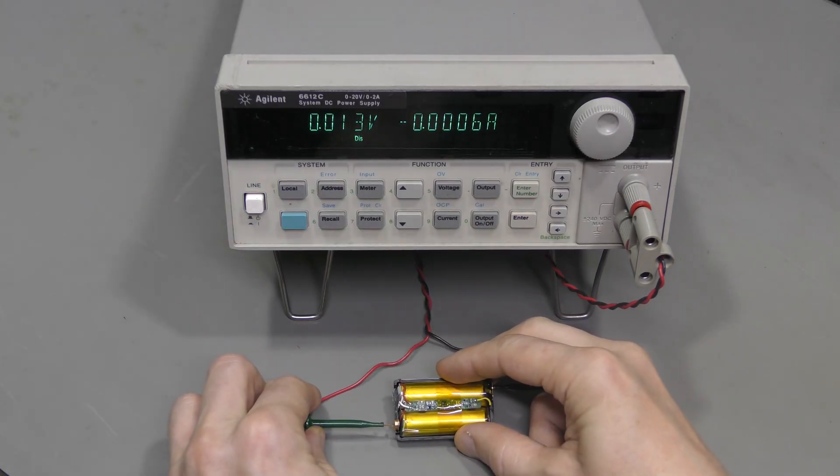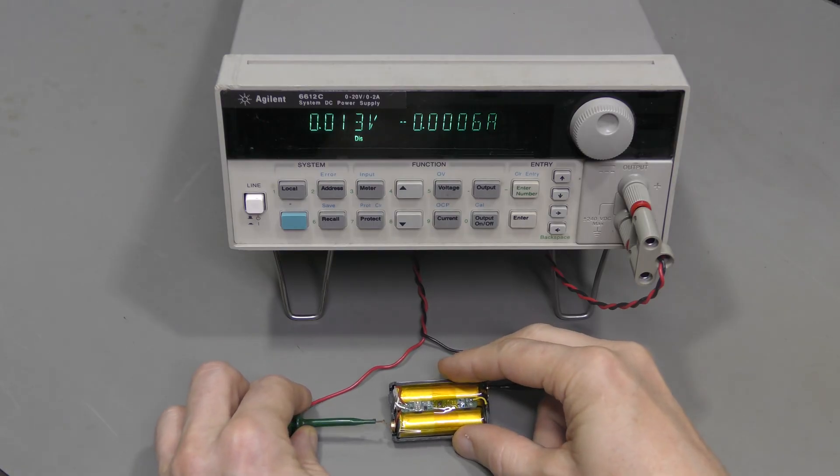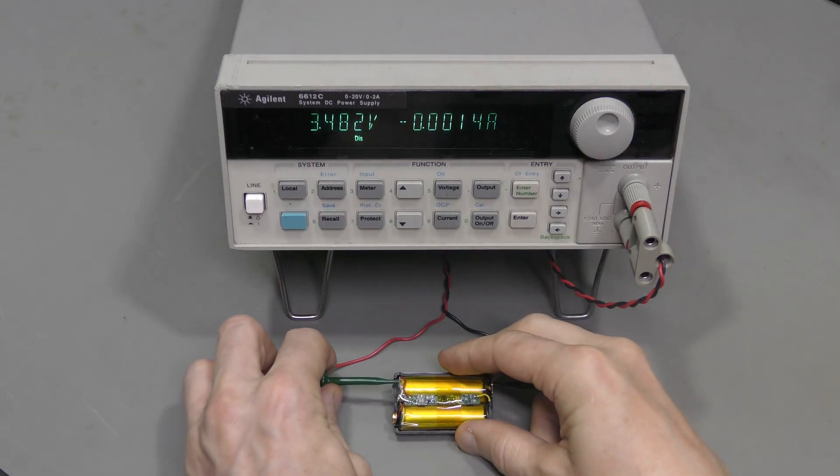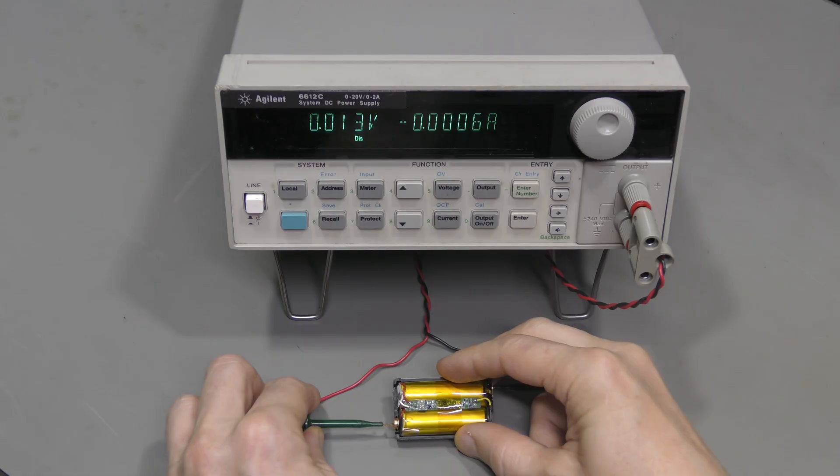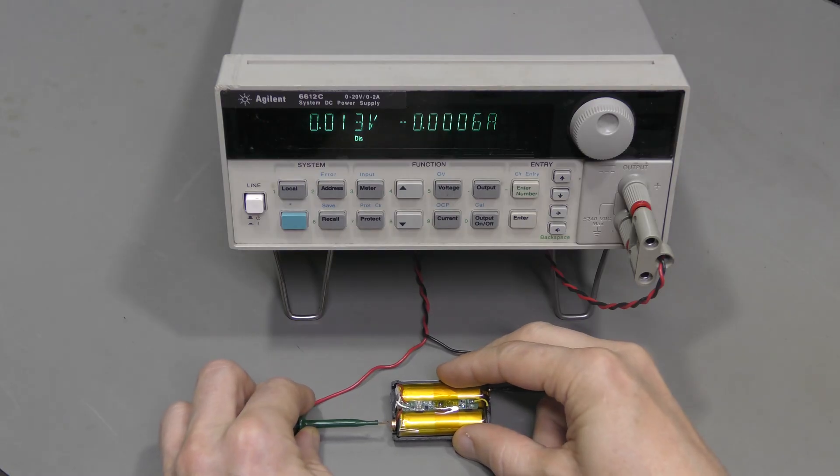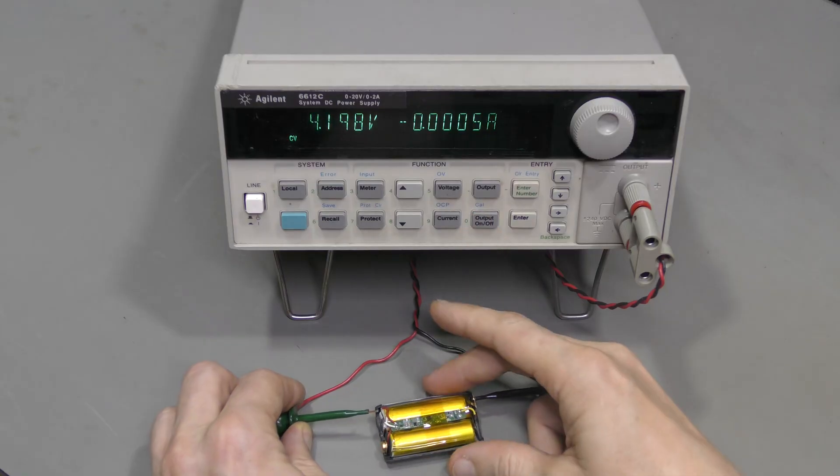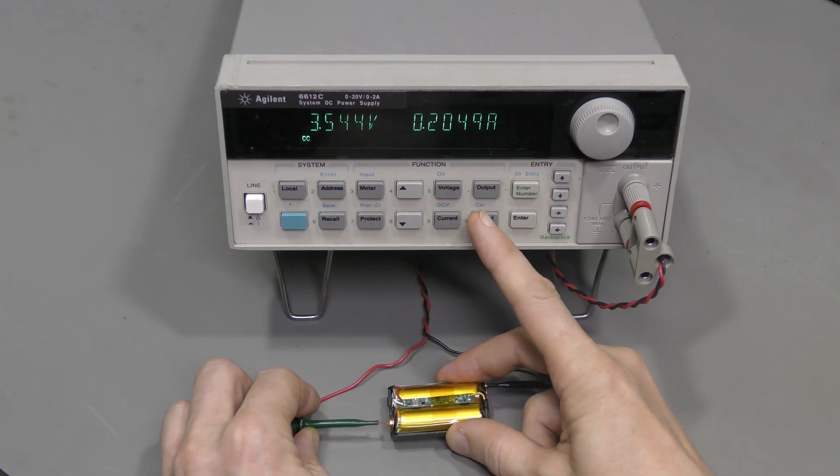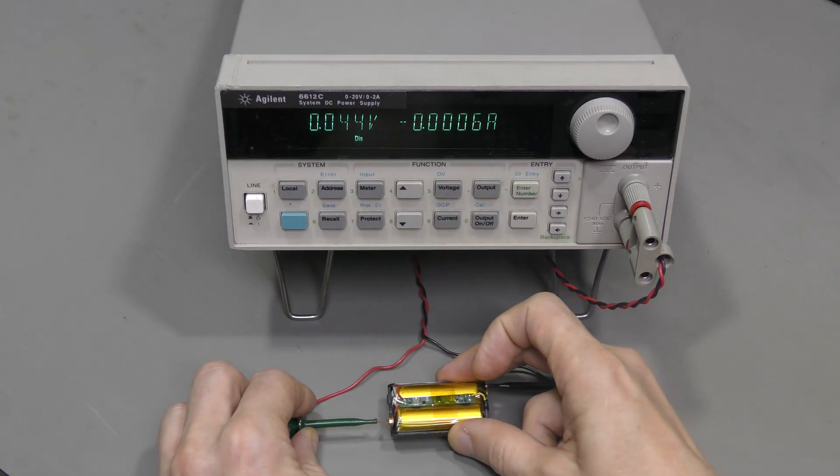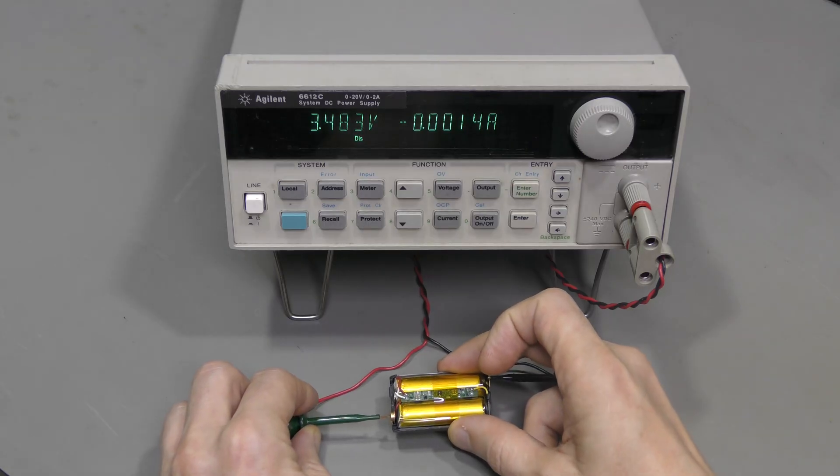It seems to hold the charge just fine. And now we should be able to move this positive to the terminal. There is no voltage there. Let's apply the voltage to the terminal. And now turn this off. And there you go. The voltage is there. This is promising.